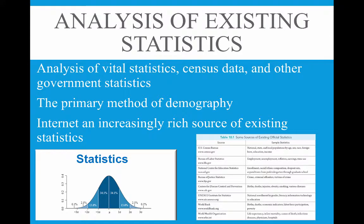The internet is increasingly a rich source of existing statistics as well. The book includes Table 10.1 showing some of the most popularly used sources of official statistics and what they're used for. For example, if you did research in medical sociology, a source like the CDC that looks at illnesses and injuries would be a good place to go. What source you use depends on what kind of research questions you have.